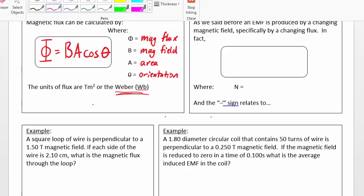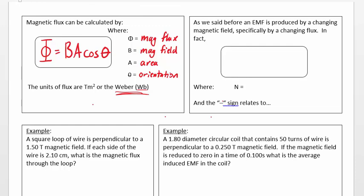Now you'll note the units for flux are tesla meters squared or simply called Webers. Now to calculate the amount of EMF that's generated, we can use something that's called Faraday's law. And so the amount of EMF generated by a changing field is equal to negative N times delta phi over T.